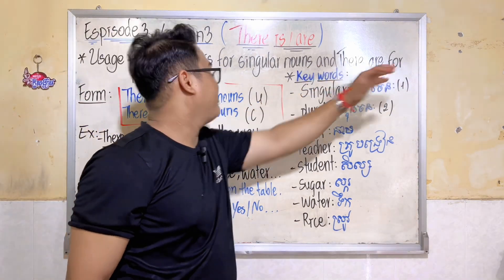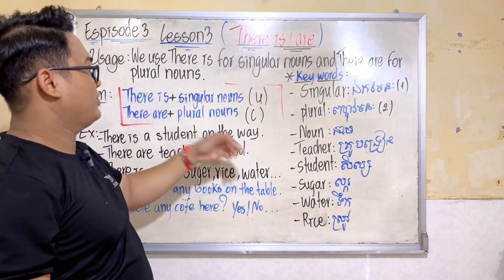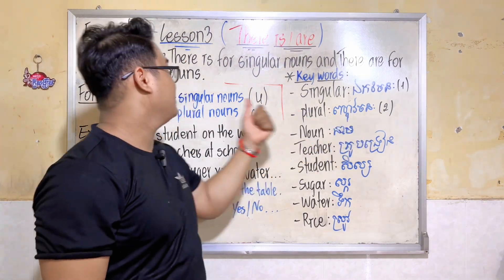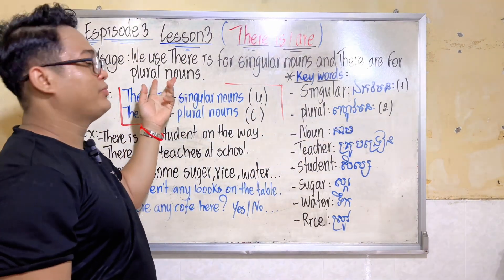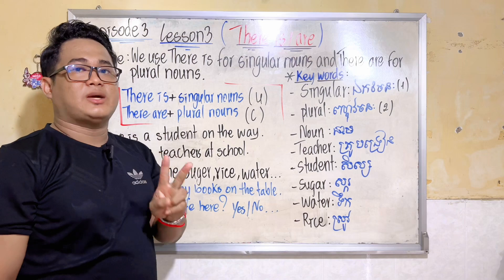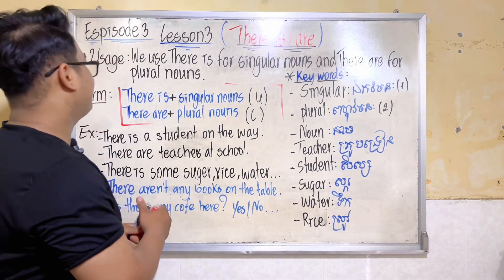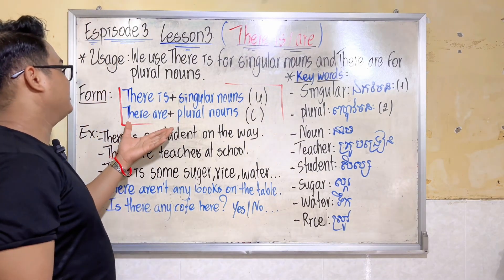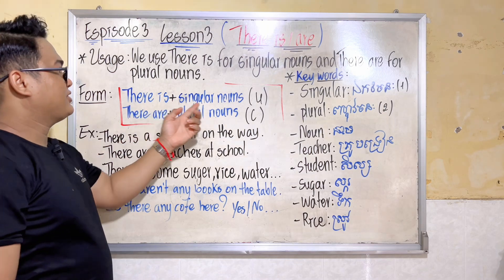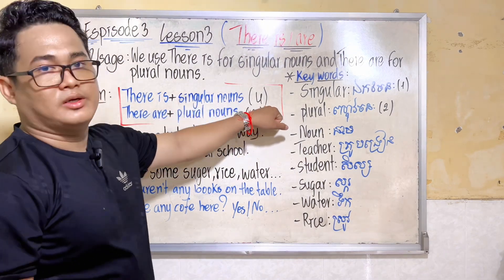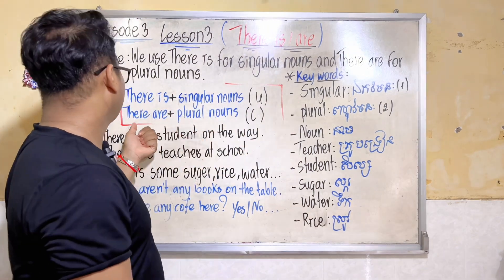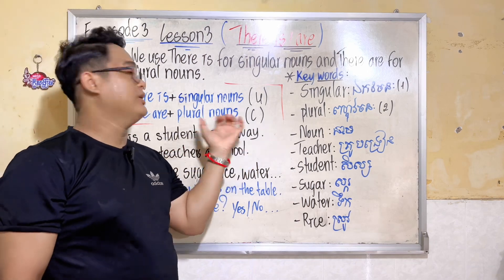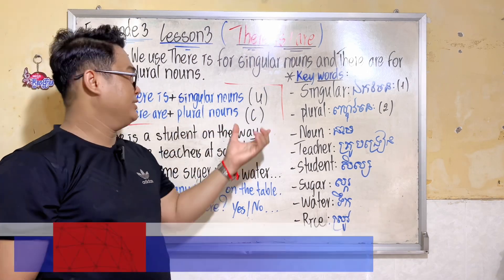And we use 'there are' for plural nouns. This is the form: 'There is' plus singular noun or uncountable noun. 'There are' plus plural noun or countable noun.